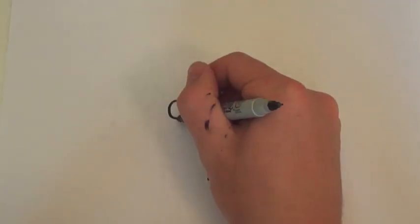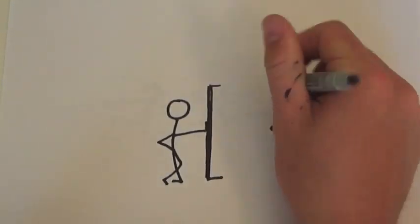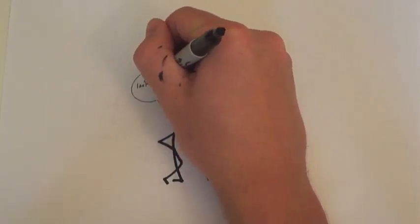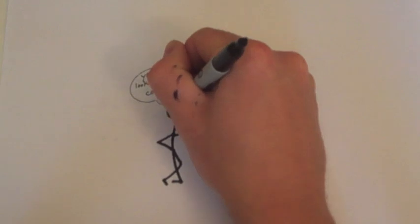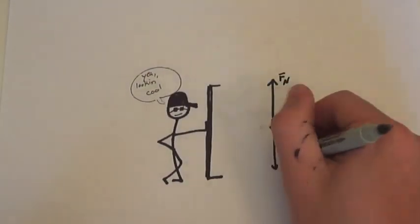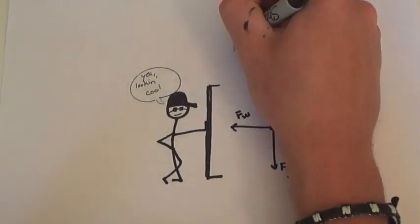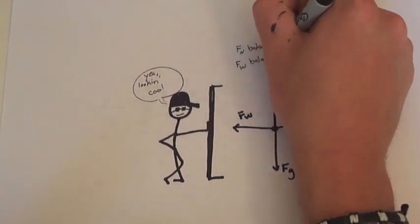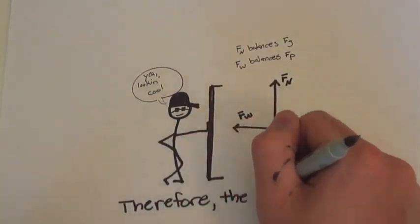Let's say we have Joe Cool over here leaning against the wall. The reason he does not fall through the wall is there is an equal reaction to his force against the wall. The force exerted from the wall balances the force of the push, so the net force comes to zero. The same goes for gravity and the normal force from the ground.